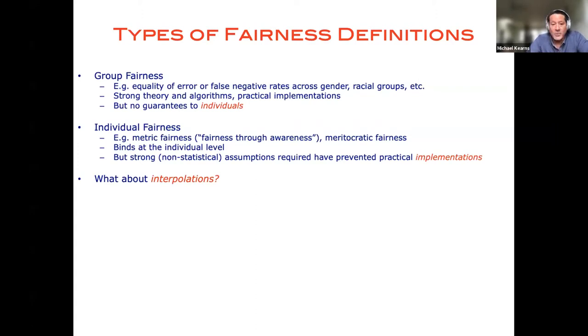And so what we've been interested in for the past several years is interpolations between these two types of definitions, things that, on the one hand, have the practical and algorithmic advantages of group fairness notions. Well, coming at least closer, perhaps not getting all the way to individual fairness guarantees, but much more granular guarantees. And the broad approach that we and others have taken is what is sometimes called the Oracle Efficient Approach.